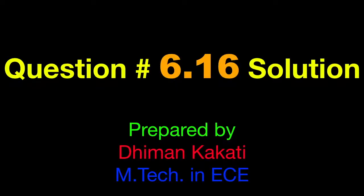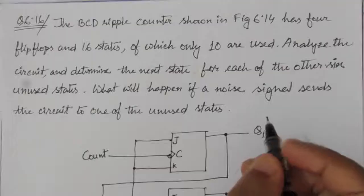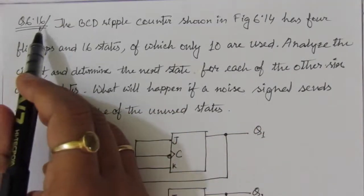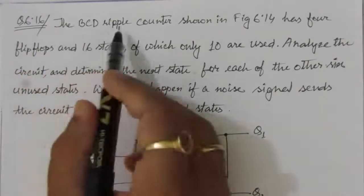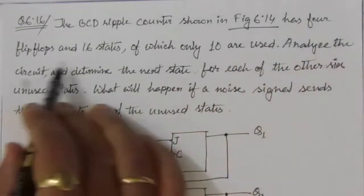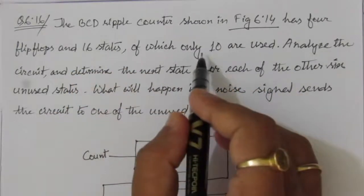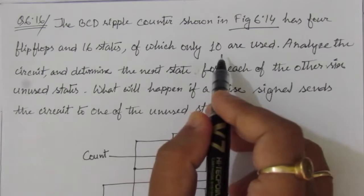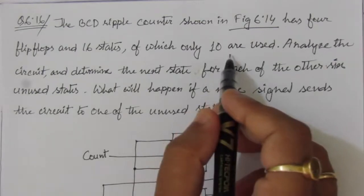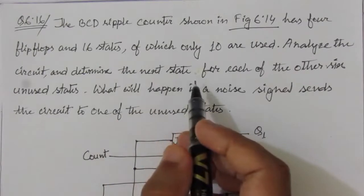Dear students, I welcome you all to this problem solution series in digital electronics. I am solving problems from the book 'Digital Design' by Morris Mano and Michael Ciletti. In this video, I am solving problem 6.16 from chapter six. The problem concerns the BCD ripple counter shown in figure 6.14, which has four flip-flops and 16 states, of which 10 are used — from 0 to 9 (0000 to 1001).